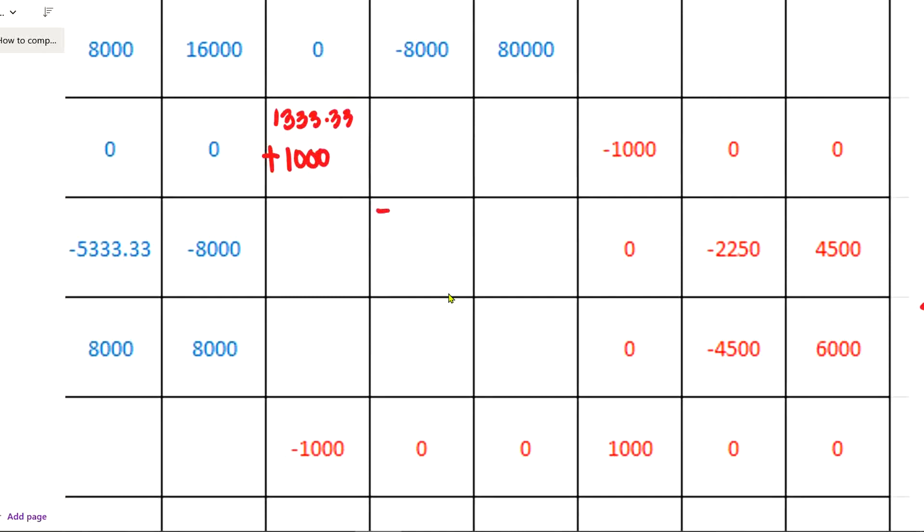And we do the same for the other diagonals: 5333.33 plus 2250, and another one is 6000 plus 12,000. That's all for the diagonals. We also have some other entries: 8000 plus 4500, another one is negative 8000 plus 4500, and the rest are zeros. Now take the sum of those, and that's it.